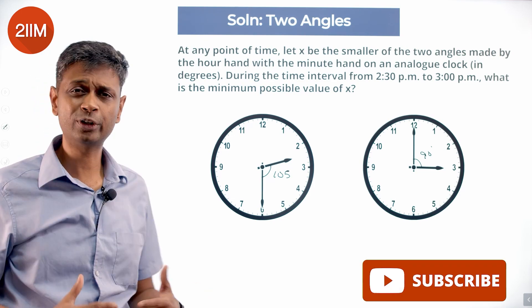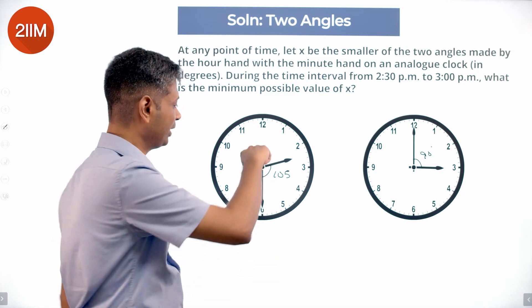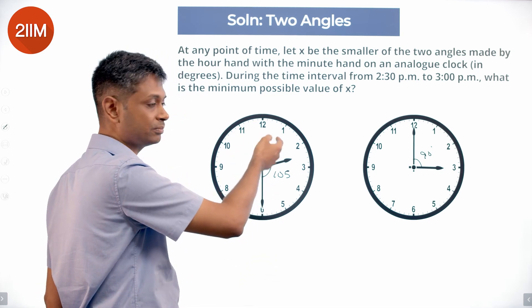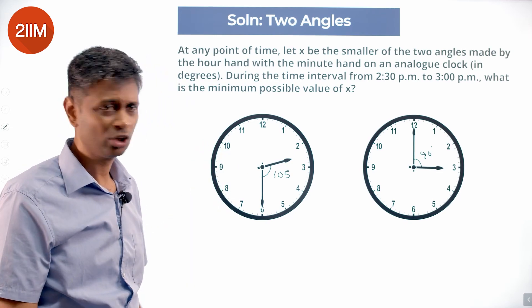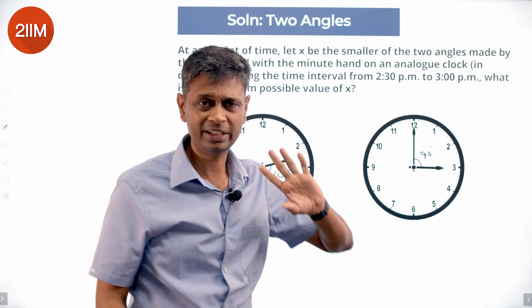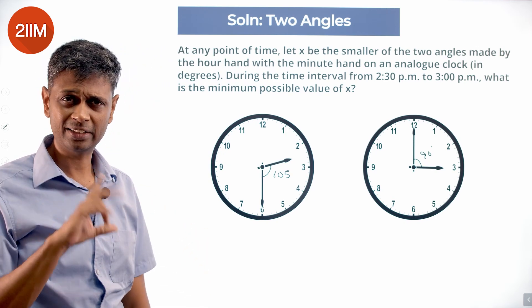What is meant by that? Between the hour hand and the minute hand, we could say the answer is 360 minus 105, which is 255 degrees, or 105 degrees. 270 degrees or 90 degrees, right? So what is the minimum possible value of x from 2:30?